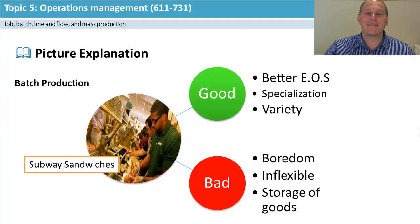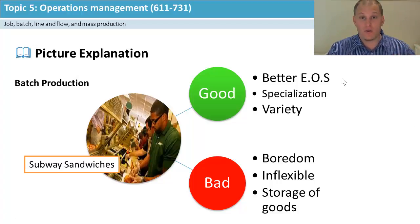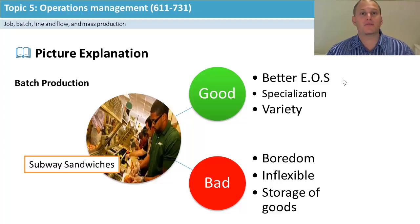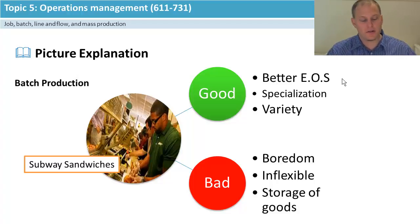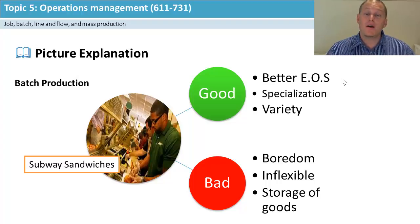Batch production gets much better economies of scale because you're making them in batches and doing them in unit orders — you can store stuff ready for each change and the unit cost can start decreasing. This allows good specialization: the person good at getting breads ready, the person at salads and condiments, the person at the cash register. Division of labor is really effective because it stops in stages and things can be prepared in each unit before it moves on.